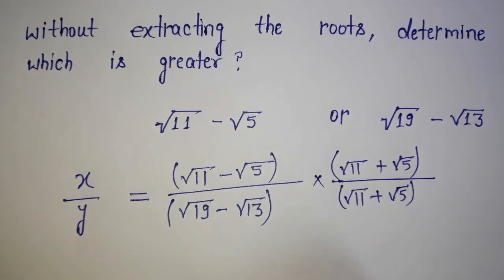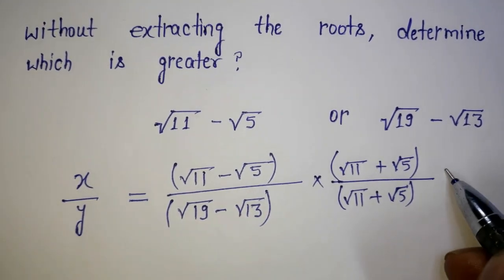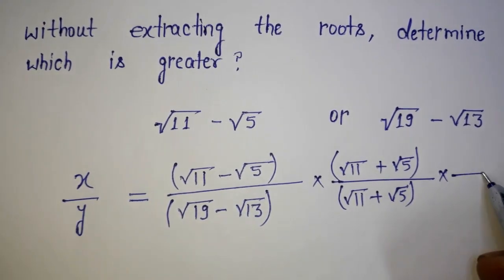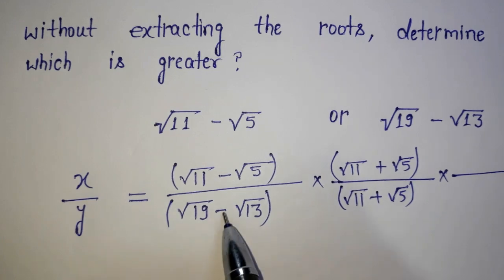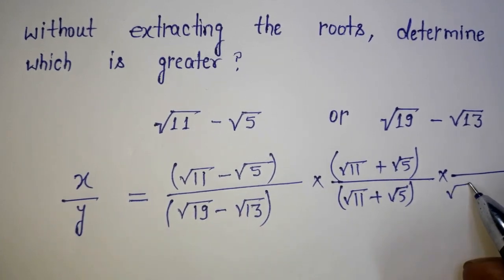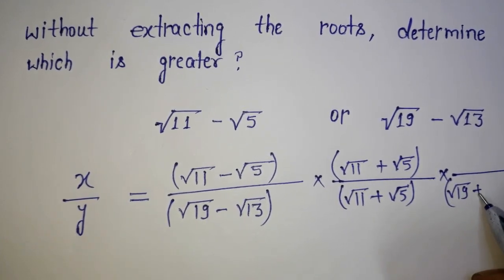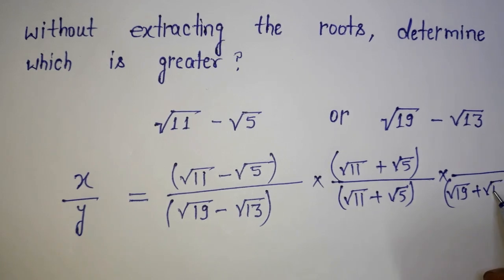Now it's time to rationalize this one. I am going to change this sign as well, giving root 19 plus root 13.